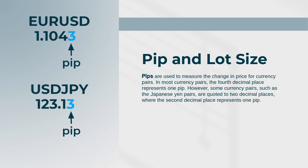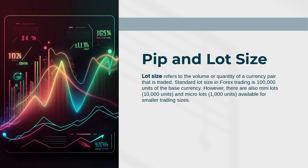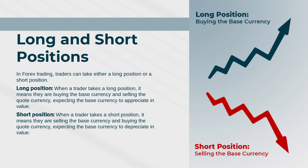Pip and lot size: pips are used to measure the change in price for currency pairs. In most currency pairs, the fourth decimal place represents one pip. However, some currency pairs such as Japanese yen pairs are quoted to two decimal places, where the second decimal place represents one pip. Lot size refers to the volume or quantity of a currency pair that is traded. The standard lot size in forex trading is 100,000 units of the base currency. However, there are also mini lots (10,000 units) and micro lots (1,000 units) available for smaller trading sizes.